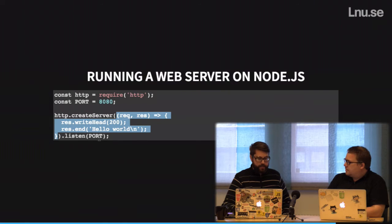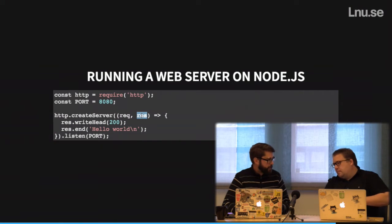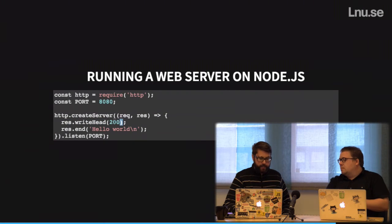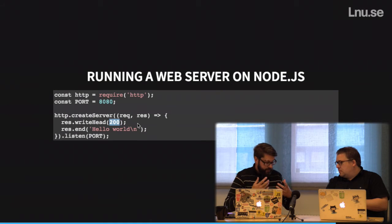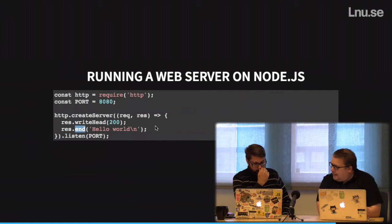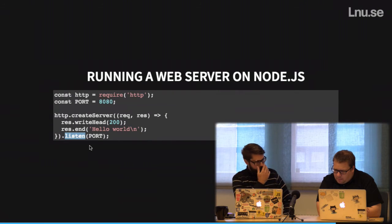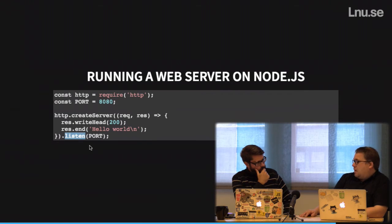This is the callback that will be called as soon as we get a request to the server. As parameters we get the request object and the response object. The request object holds all information about the request, and we use the response object to send the response back. We're sending a response with status code 200 — the HTTP status code for saying everything went okay — and we're ending the response and sending data. In this case it's 'Hello World'.